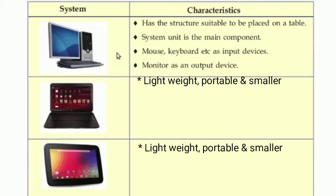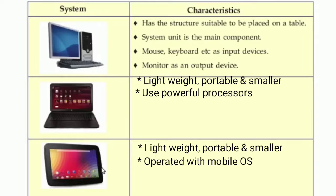In desktop computers, the system unit is the main component and powerful processors are used. Similarly, in laptops, powerful processors are used. But in tablets, mobile operating systems are used — tablets are operated with mobile operating systems like Android, iOS, etc.